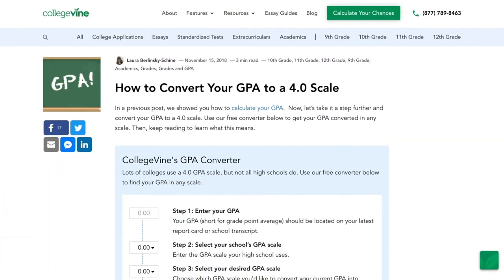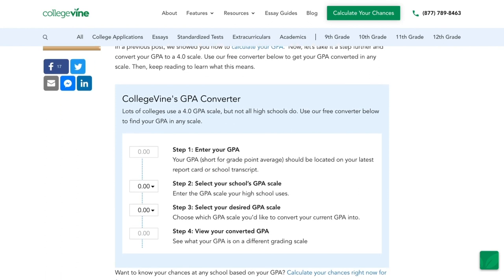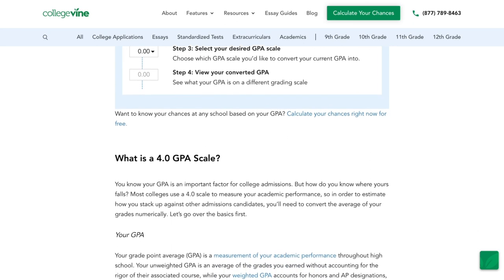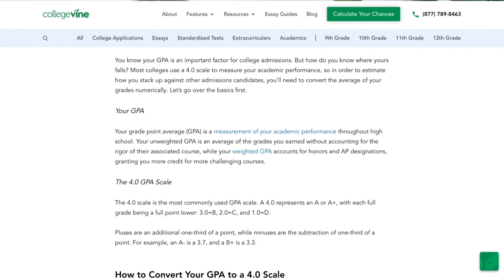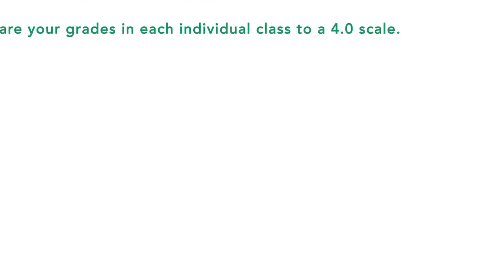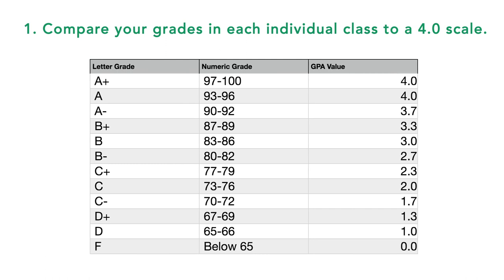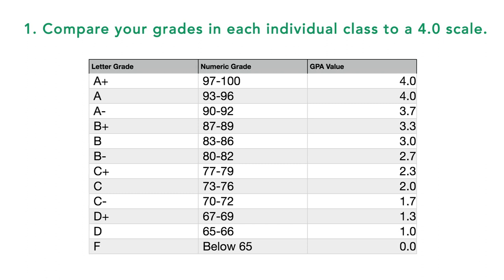Most colleges recalculate GPAs or consider an applicant's academic progression holistically according to their own selection process. Still though, it can be helpful for your own purposes and your own college search to know how your GPA stacks up on the standard 4.0 scale, so you may want to convert it yourself. It's actually a fairly simple process, and we at Collegevine have made it even easier with our GPA converter. We're going to link to that converter in our comments so that you can enter your GPA and your school's scaling system and have it automatically converted to any other scale you wish to use.